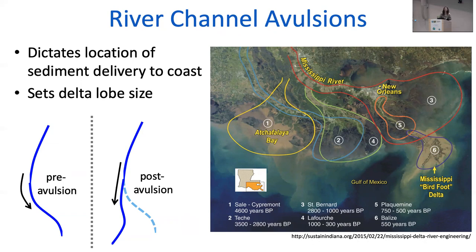These avulsions, although they are a natural process, are currently not great for us as humans. We have built up a lot of infrastructure around rivers — for example, New Orleans. If the channel were to relocate now, not only would that impact us economically, but it could also cause all kinds of problems in terms of flooding, damaging infrastructure, and threatening human lives. In the case of the Mississippi, about almost a century ago we began regulating the flow down its current path versus letting it avulse to go down the Atchafalaya River.